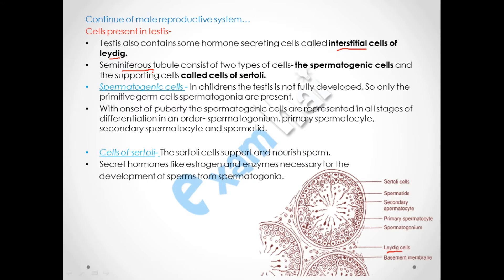The testes have various compartments of seminiferous tubules in which sperm cells are produced. The seminiferous tubules consist of two types of cells: spermatogenic cells and supporting cells called Sertoli cells. Spermatogenic cells produce the sperm cells, and Sertoli cells nourish the sperm cells — that is why Sertoli cells are also called nurse cells.